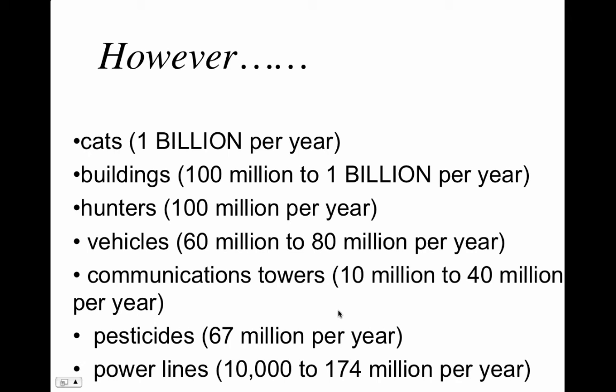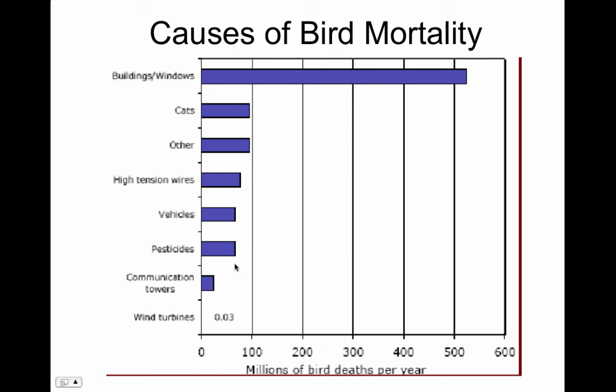To put it in context: cats kill over a billion birds per year in the United States, buildings kill 100 million to a billion birds per year, hunters kill 100 million birds per year, vehicles kill 60 to 80 million birds per year, communications towers kill 10 to 40 million per year, and pesticides kill 67 million birds per year. If we're really worried about birds, we should start thinking about some of these other things. The graph shows wind turbines are way down at the bottom — there are just not that many birds killed by wind turbines.